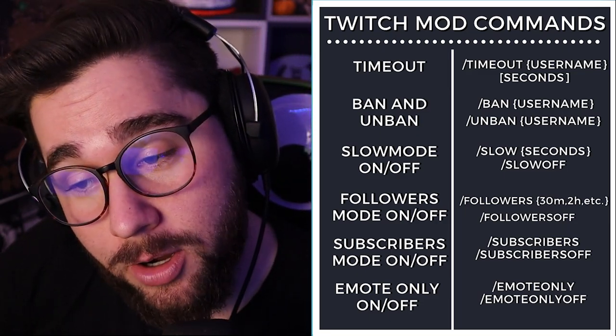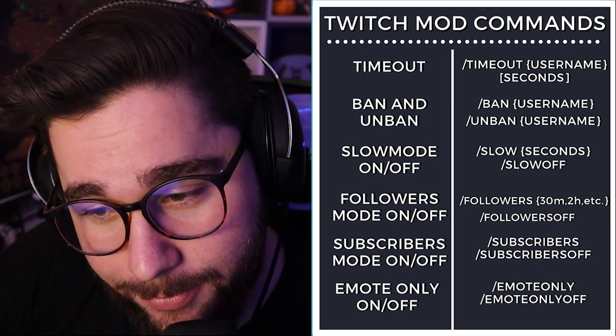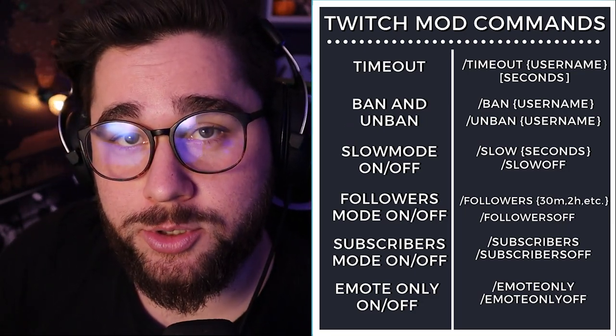For subscribers only mode, you do forward slash subscribers, and to turn it off, forward slash subscribers off. To purge or clear the chat, do forward slash clear — that deletes all messages. For unique chat, whatever someone types has to be completely different from what they typed before, so they can't spam the same thing over and over. You do forward slash unique chat to enable it, and forward slash unique chat off to disable it. For emote only mode, forward slash emote only, and forward slash emote only off to turn it off.